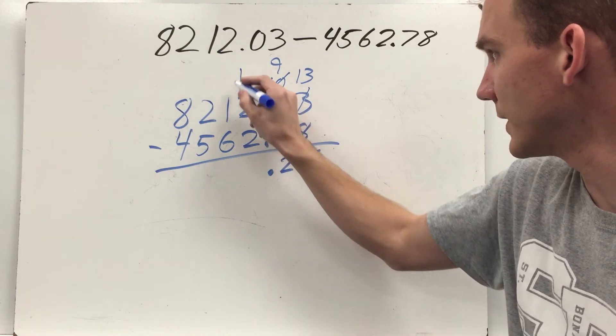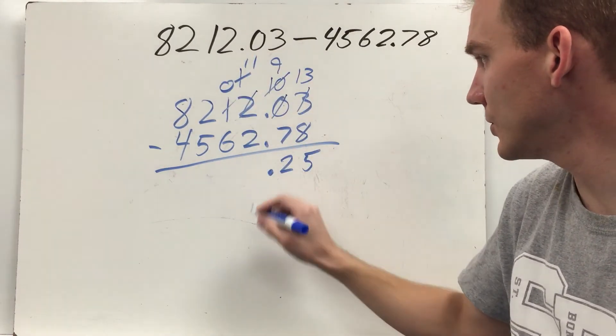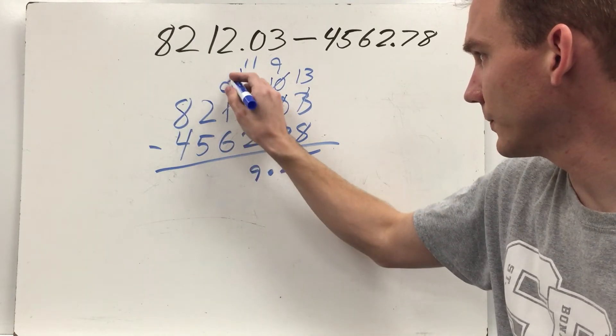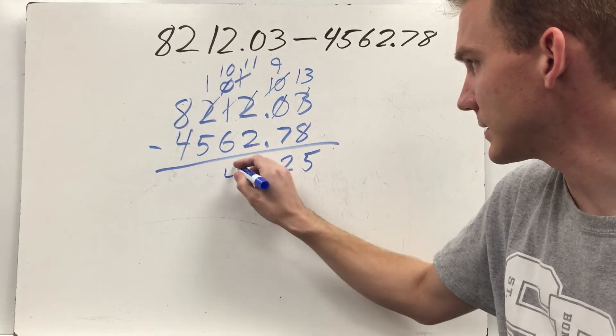Bring down my decimal point. One minus two, got to regroup again. Eleven minus two is going to be nine. Zero, got to regroup again. Ten minus six is four. There's a lot of regrouping this one.